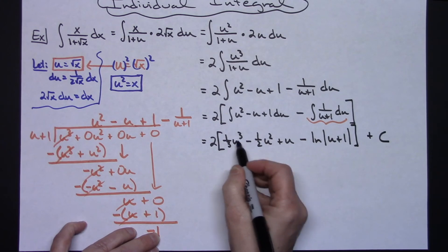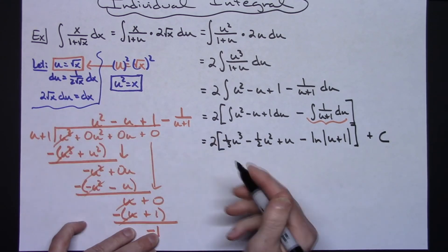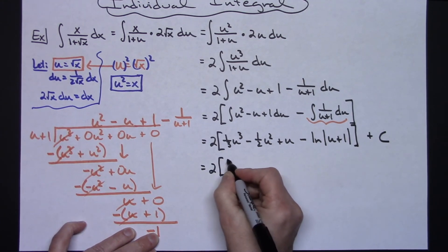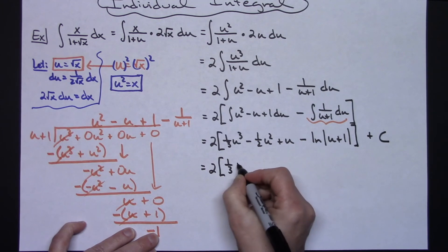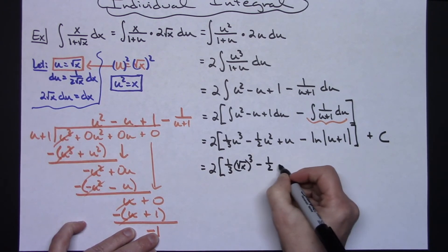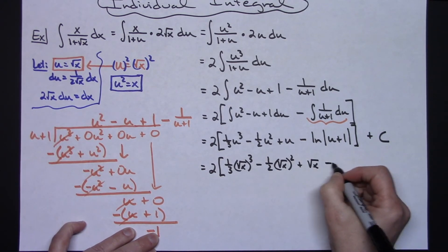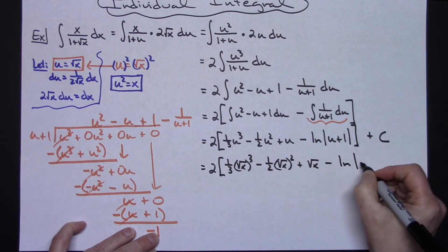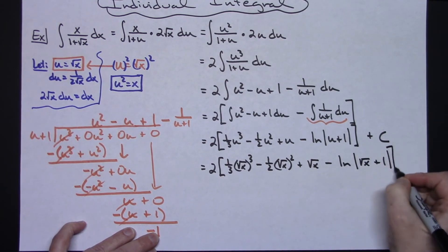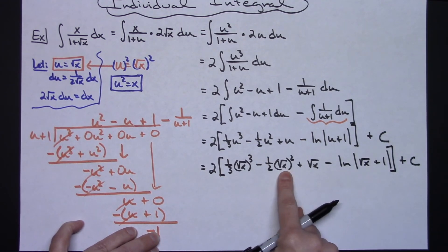Now we substitute back, replacing u with the square root of x. This gives 2 times one-third (sqrt(x))^3 minus one-half (sqrt(x))^2 plus sqrt(x), minus ln|sqrt(x)+1|, plus C.